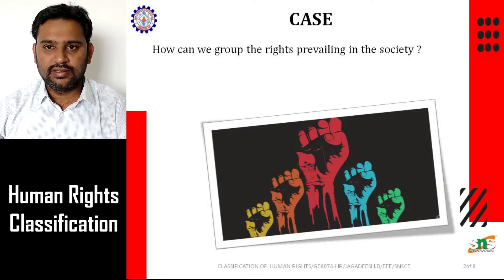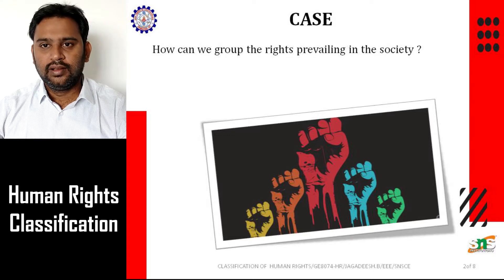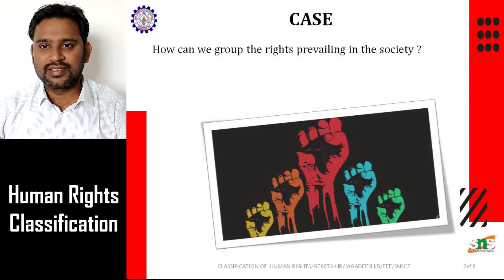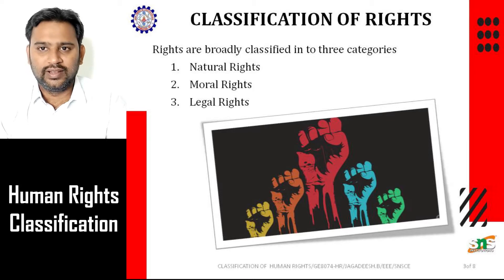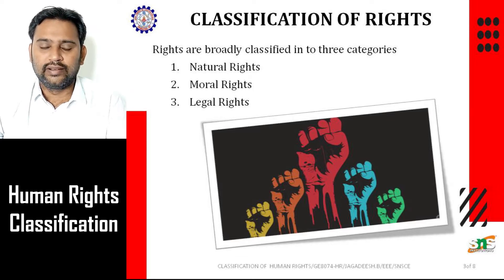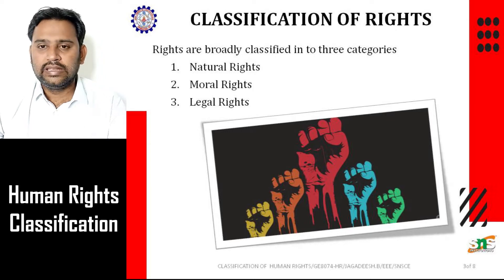Good morning, dear learners. This lecture gives you the broad classification of human rights. From a previous session we came to know a lot of human rights prevailing in the world. Human rights are broadly classified into three types: the first is natural rights, the second is moral rights, and the third is legal rights. All rights — such as political, civil, economical, and social rights — come under the banner of these three broad categorizations.